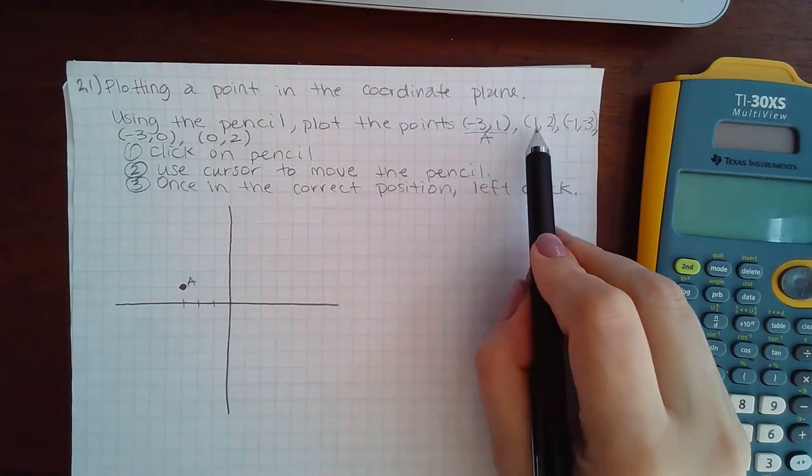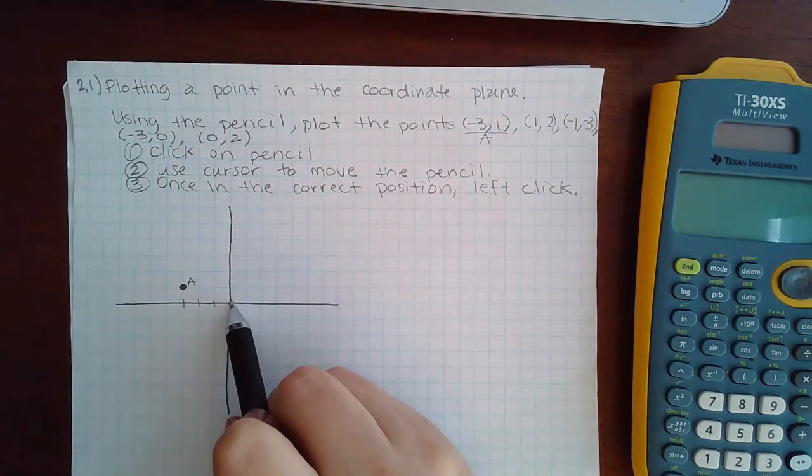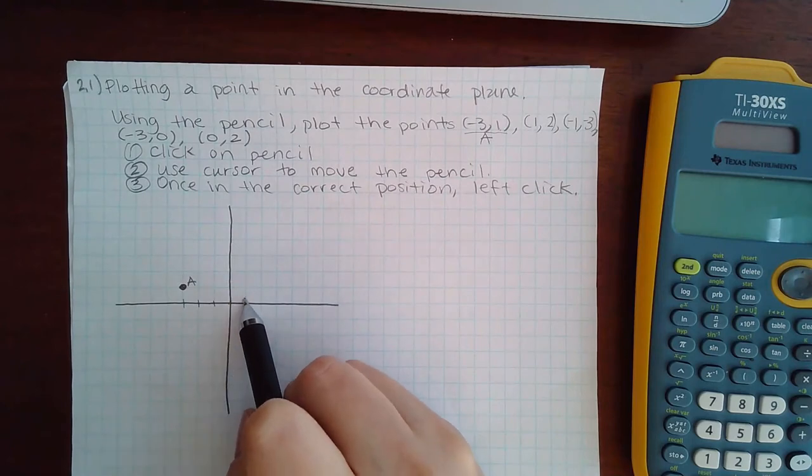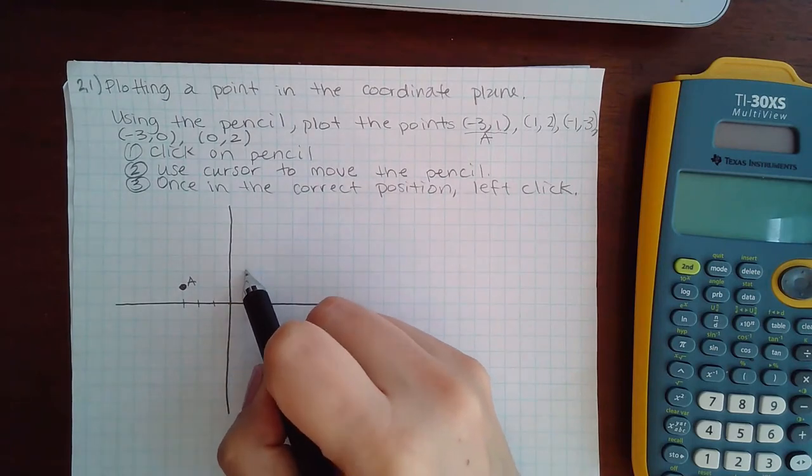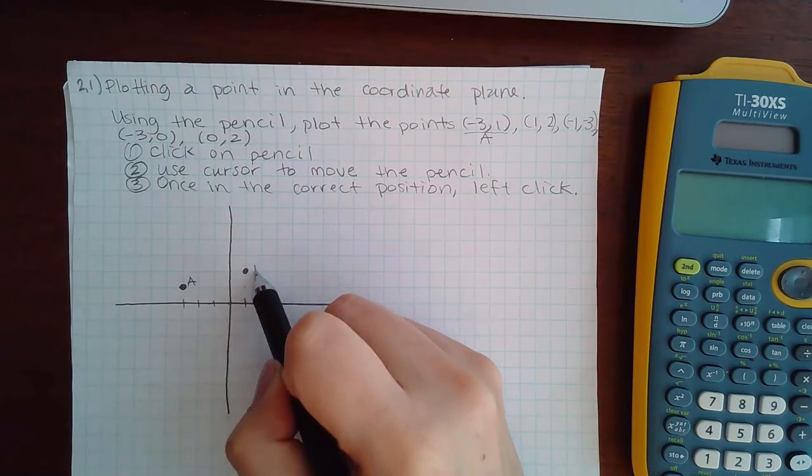Here I'm going to go 1, 2. So x value being positive means move to the right one, and y value being positive means from there move up 2. So this is B.